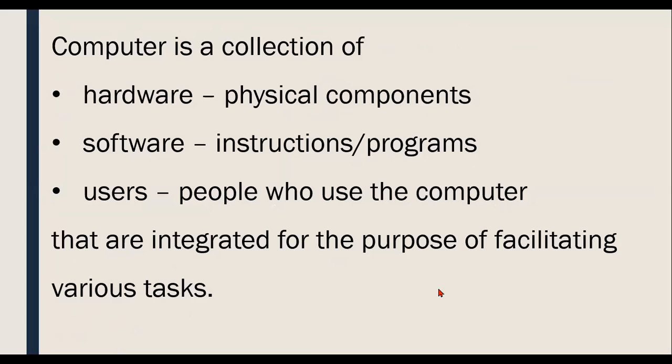We also understood that a computer is a system — a collection of hardware, software, and users, these three main components working together as a computer system. Hardware simply refers to the physical components — things we can touch and feel, the tangible components. Software refers to the programs or instructions that run the computer. Users are the people who use the computer. The computer system can be illustrated in a block diagram.